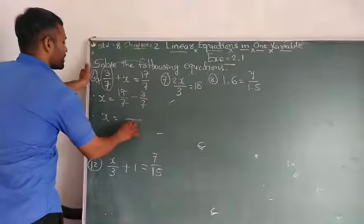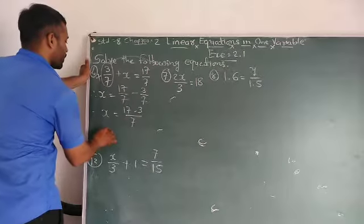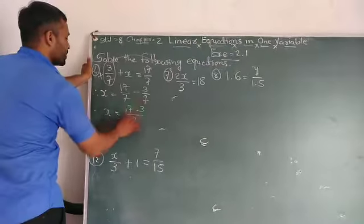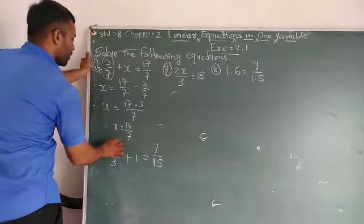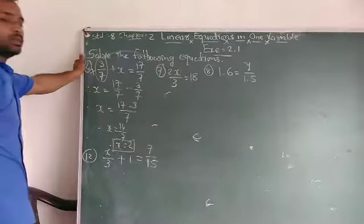So x = 17 minus 3 is 14/7. Means x = 2. x = 2.